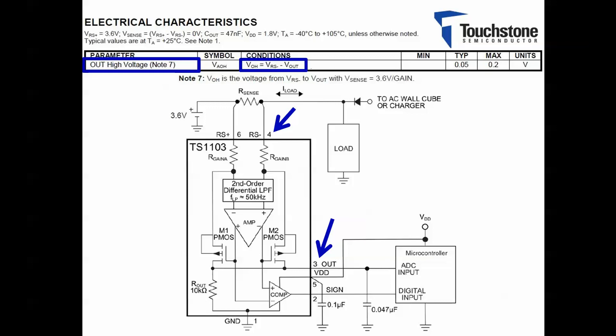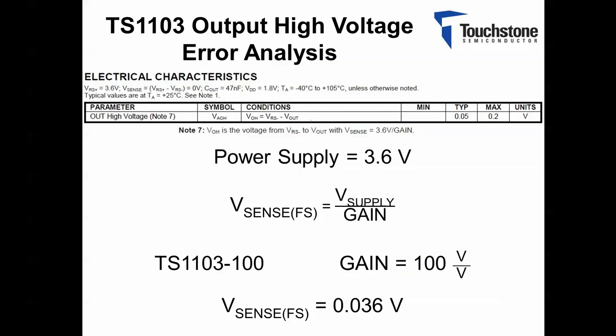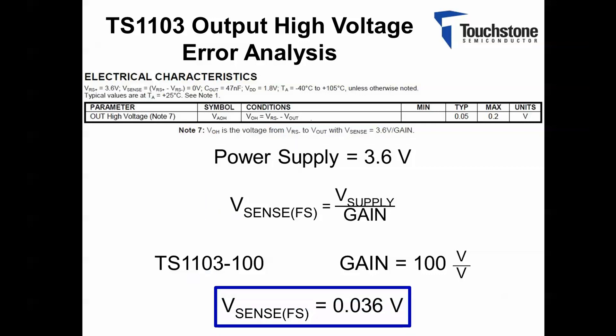Now let's begin the calculation. First, I will start by calculating the full-scale voltage across the R-sense resistor. The equation for the full-scale V-sense is found in note 7 below the EC table. By substituting the values into the given equation, I have solved for the full-scale V-sense.